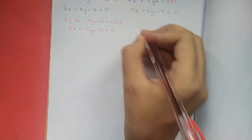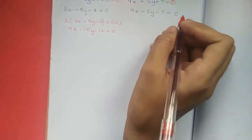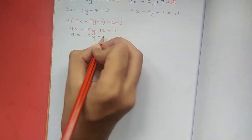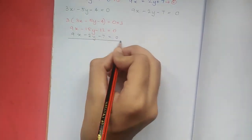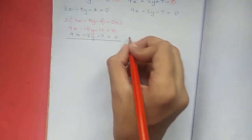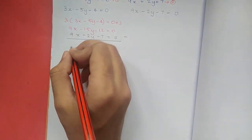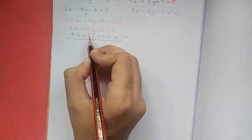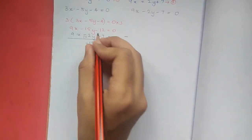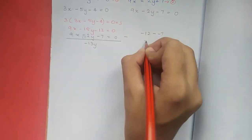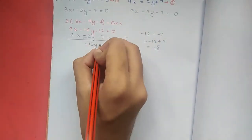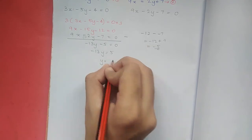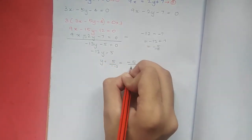Now the equation is 9x minus 2y minus 7 equal to 0. Subtracting the equations: 0y minus 15y gives minus 15y, and minus 2 plus 0 gives minus 13y. Then minus 12 minus of minus 7, which is minus 12 plus 7, equals minus 5. So minus 13y equals minus 5, giving y equals minus 5 by 13.